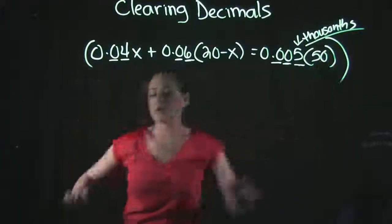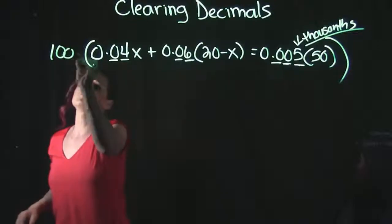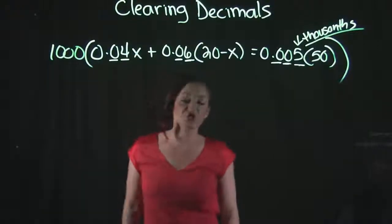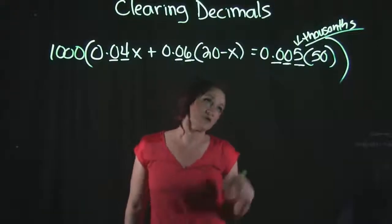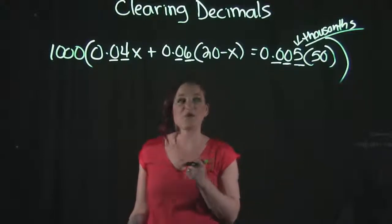So I'm going to take my entire equation, notice I put parentheses around the entire equation, and I am going to multiply the entire equation by one thousand. The thousandths place value multiplied by a thousand.